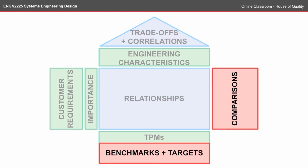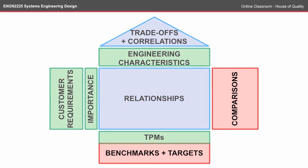In your groups, if you've already come up with a good design for your product, you might be able to jump to the comparison, benchmarking, and target sections. But we'll cover this to some extent in the system evaluation topic. So this gives us our complete House of Quality, but today we're just focusing on these blue sections.